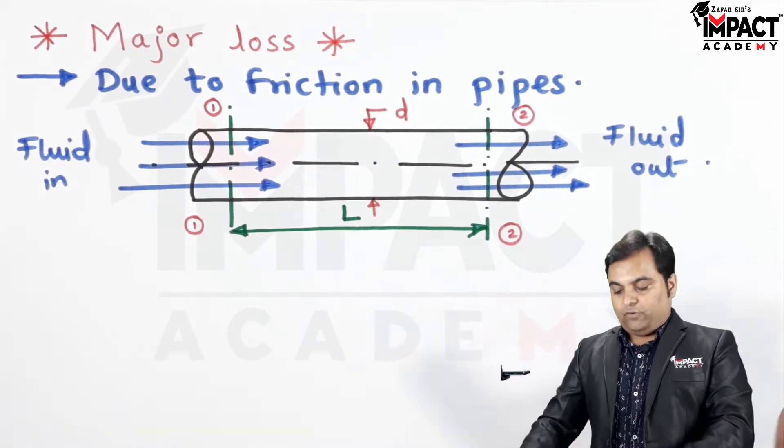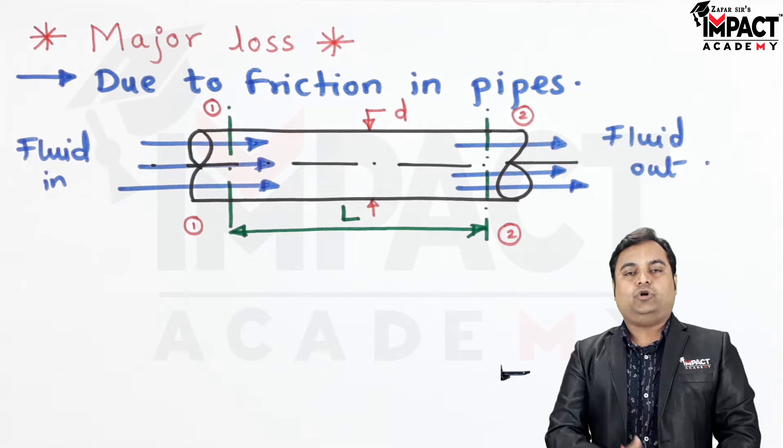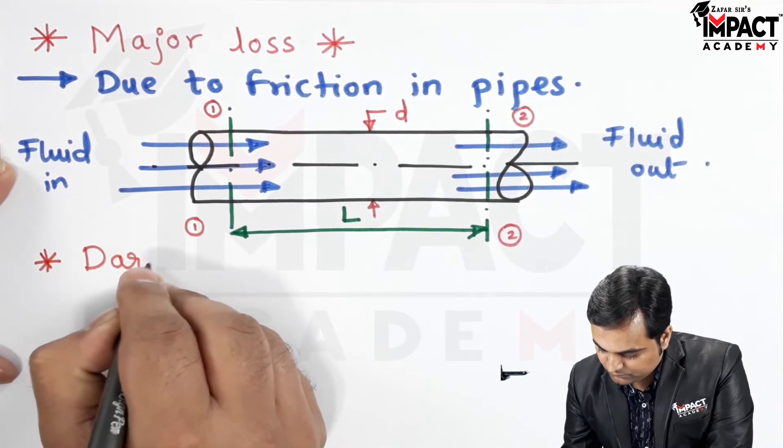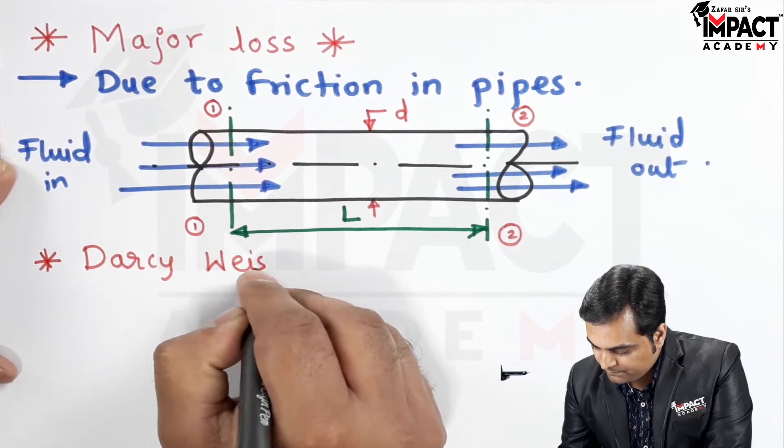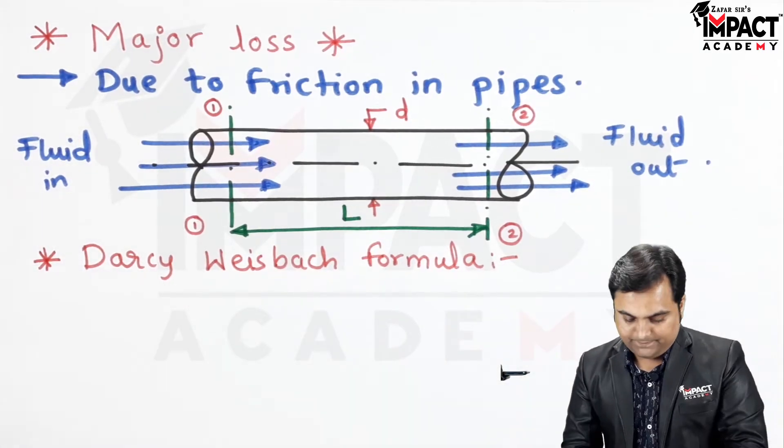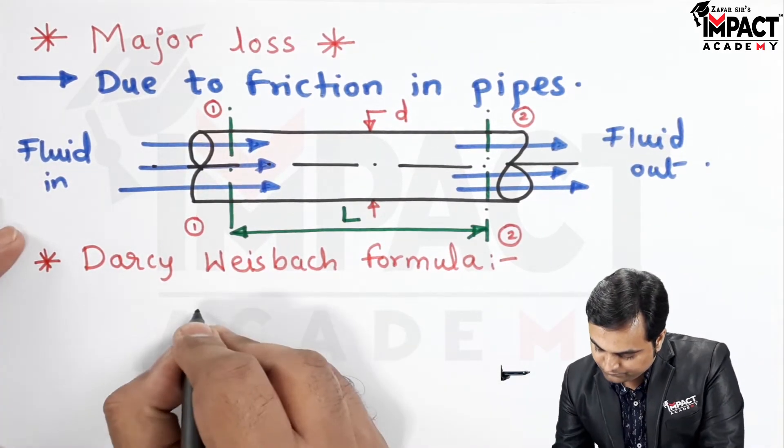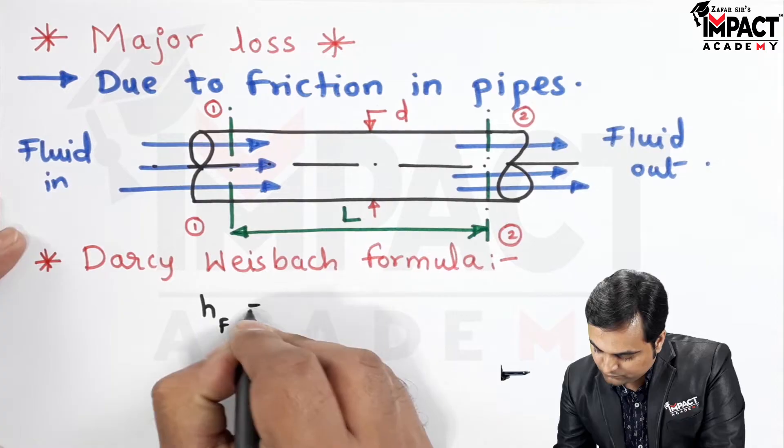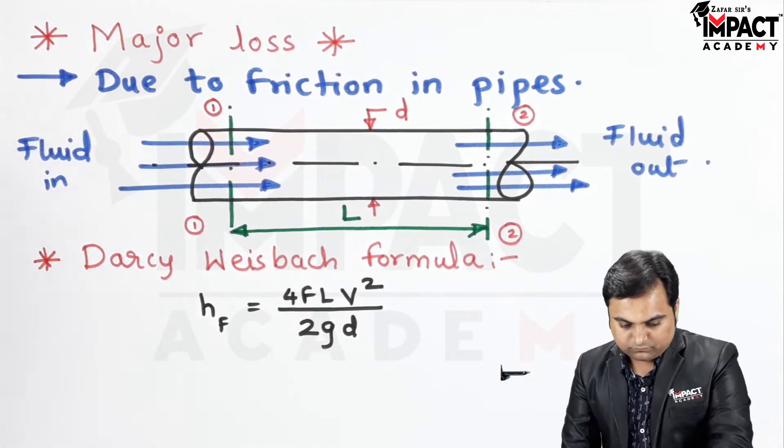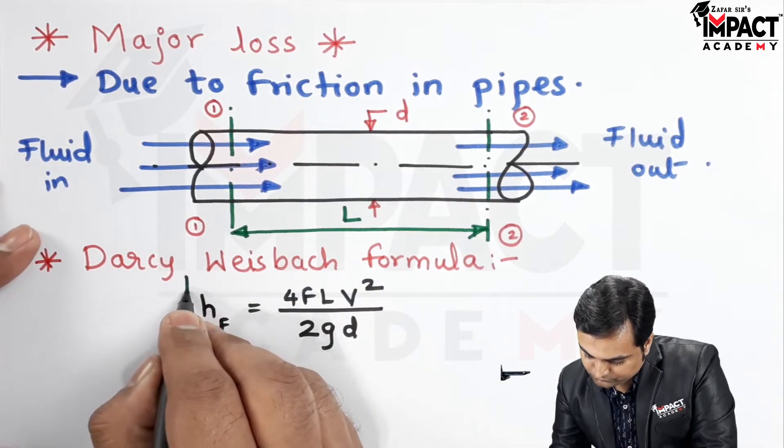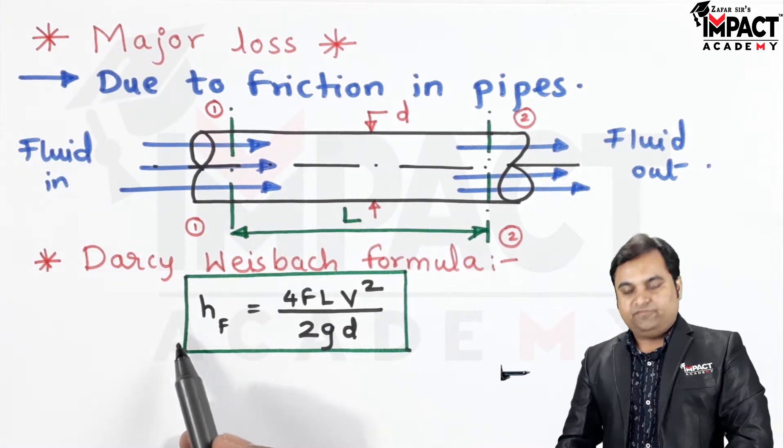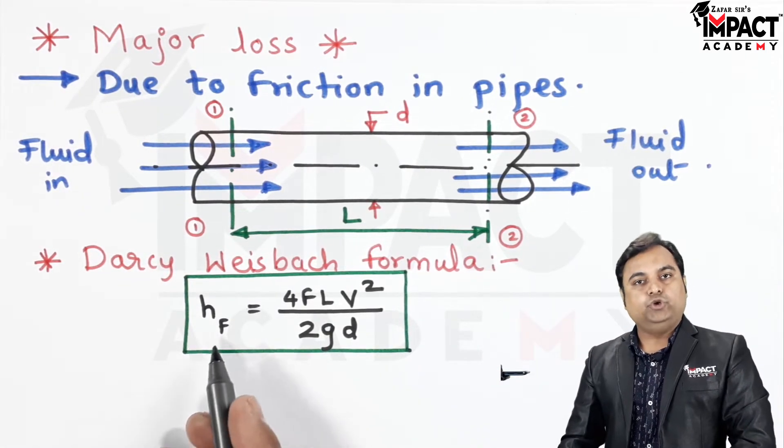The major loss formula which I am going to write here is called as the Darcy Weisbach formula. And it is given by: